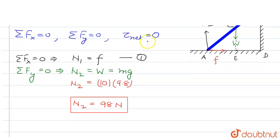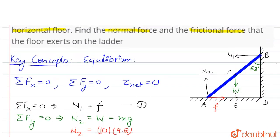Now we'll use our third key concept which says torque at any point is zero. So let's say we find torque at point A equals zero. So at point A, the torque due to N2 and f would be zero because these two forces pass through this point.